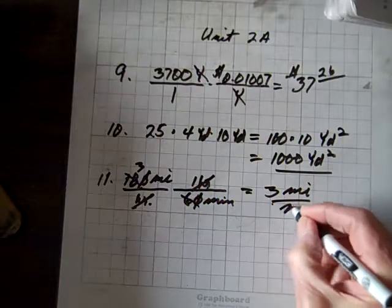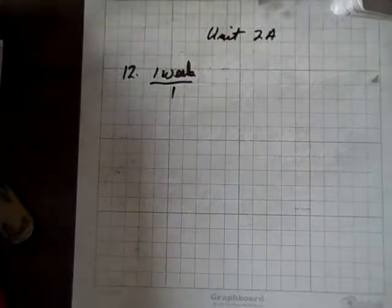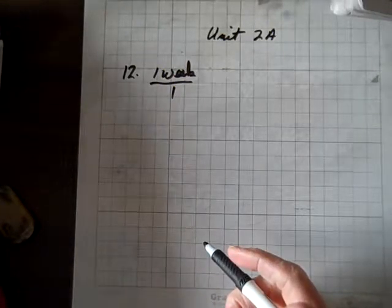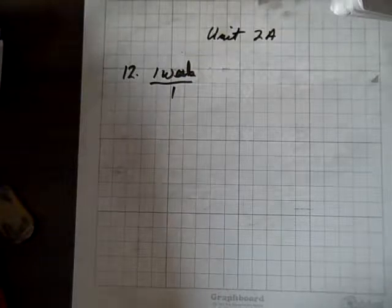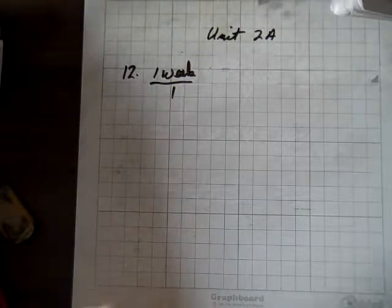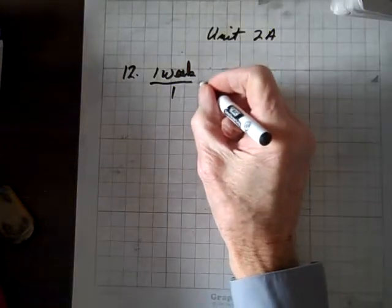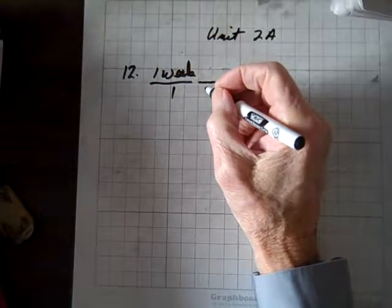So finally, for number 12, the question is, do you find the number of seconds in a week by multiplying 7 by 24 by 60 by 60? Let's find out. We'll use unit multipliers, dimensional analysis.